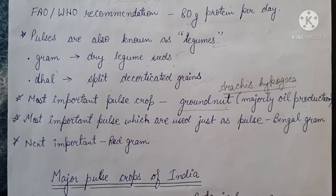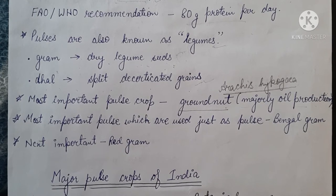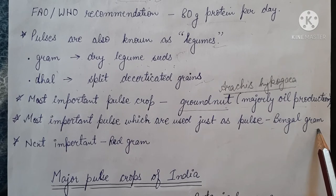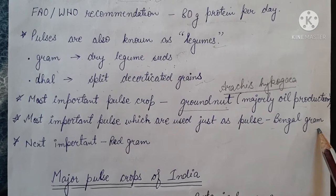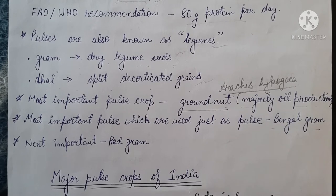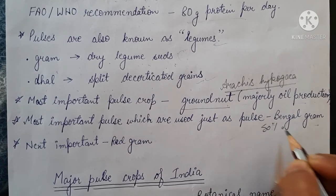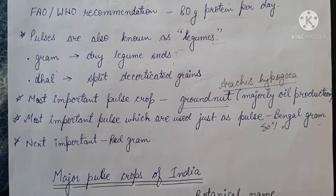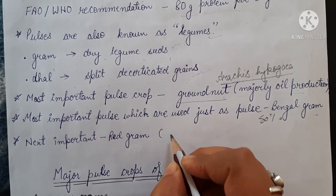Leaving aside groundnut, among the legumes used just as pulse, the most important pulse crop in India is Bengal gram, also known as channa or chickpea. It is grown in an area of two-fifths of that under pulse cultivation and accounts for 50% of the total production of pulses. Next to Bengal gram is red gram.